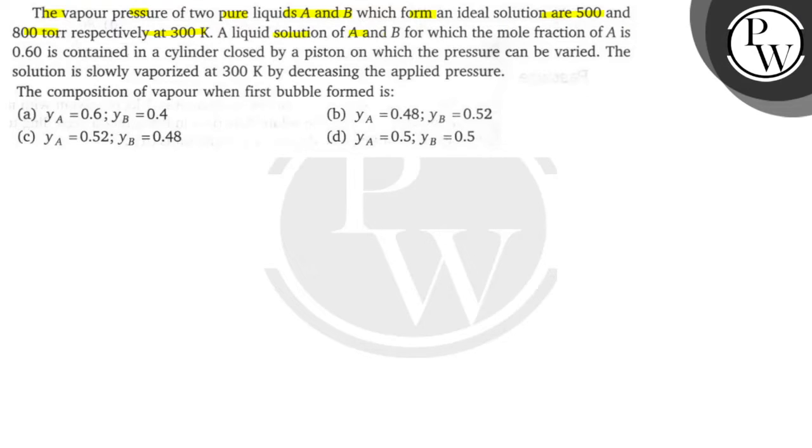Ideal solution of A and B for which mole fraction of A is 0.6 is contained in a container closed by a piston on which pressure can be varied. The solution is slowly vaporized at 300 Kelvin by decreasing the applied pressure. The composition of vapor when first bubble formed is?